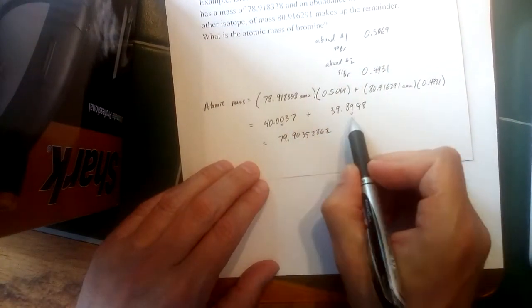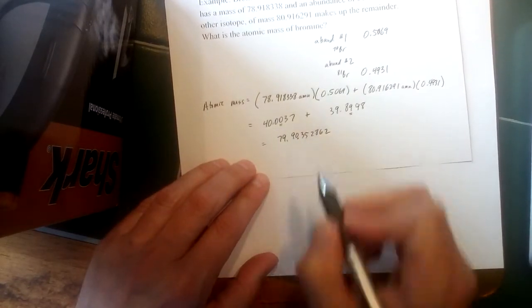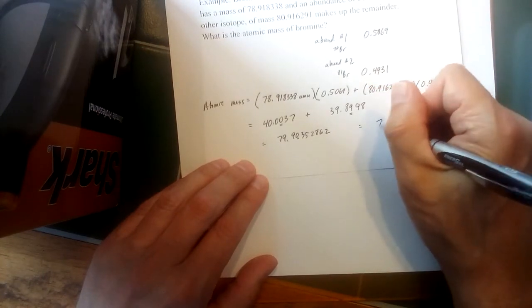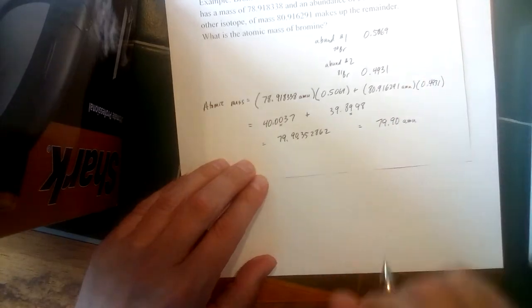This one should only be significant to the second place after the decimal, so our answer here would be 79.90 atomic mass units. That would be the atomic mass for bromine.